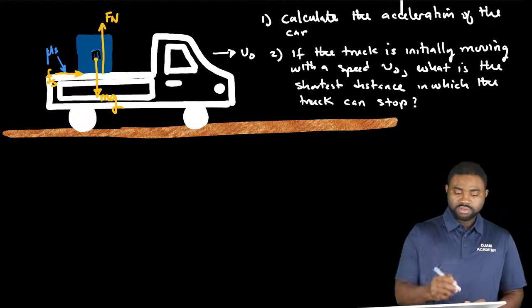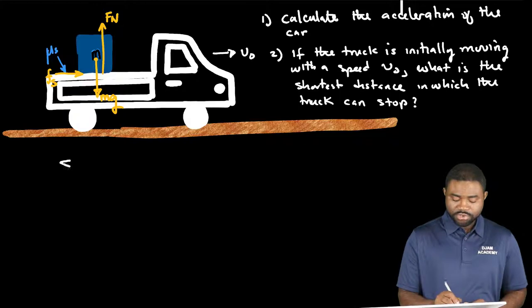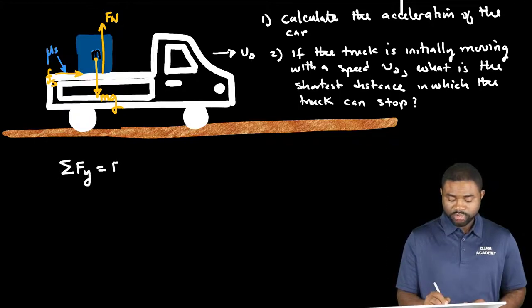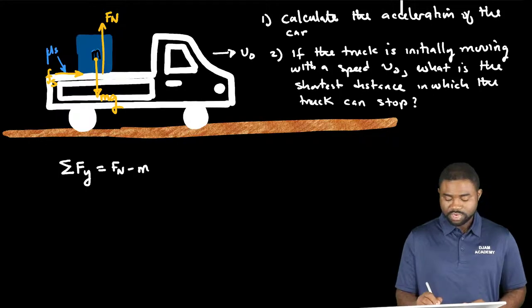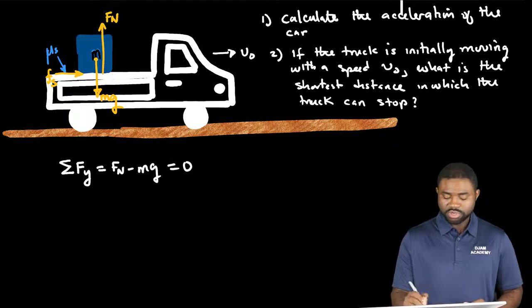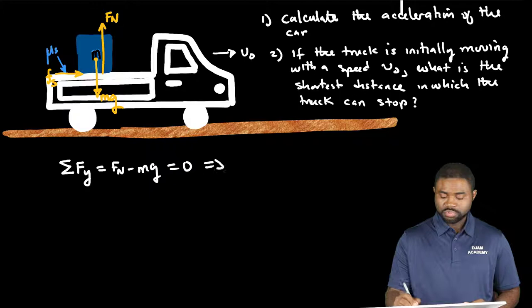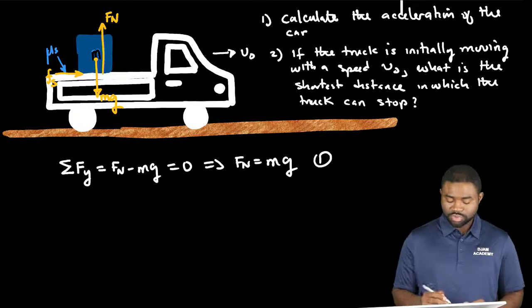That being said, applying Newton's second law in the y direction we have Fn minus mg all equal to 0, which means that Fn is equal to mg. Let's call this equation 1.